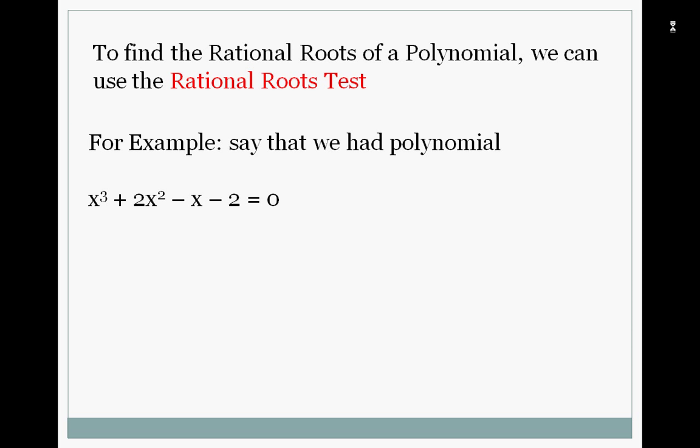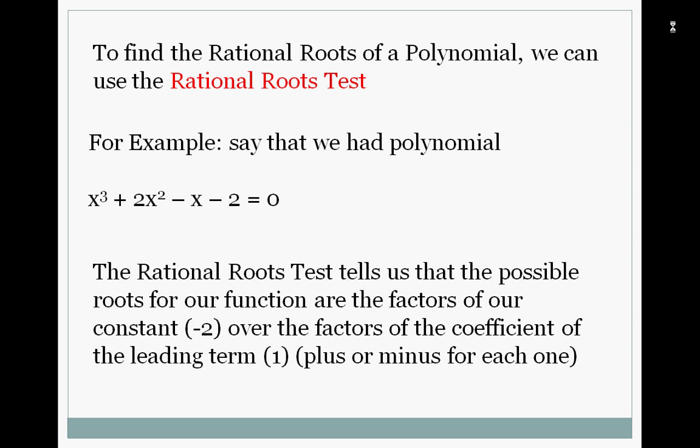For example, say that we had the polynomial x³+2x²-x-2=0. The rational roots test tells us that the possible roots for our function are the factors of our constant which is -2 over the factors of the leading term 1.